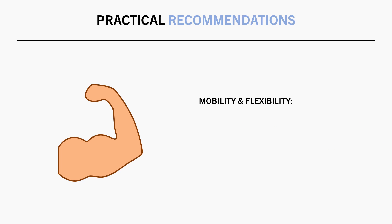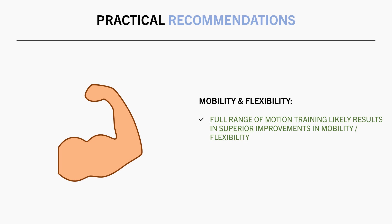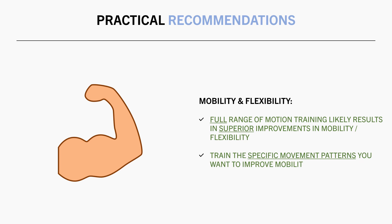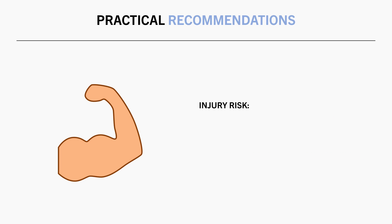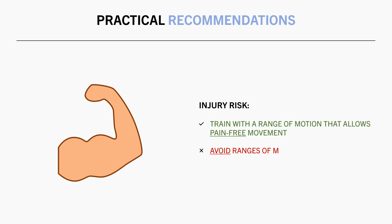For mobility and flexibility, there isn't much data to go off, but it seems reasonable to assume that training with a larger range of motion will likely improve flexibility to a greater extent than partial range of motion. More specifically, we would probably want to lift through the specific movement patterns and joint positions that we are trying to improve flexibility of. And in terms of injury risk, there isn't really much evidence to suggest an effect either way. Instead, lifters should train with a range of motion that allows them to lift pain-free and avoid certain ranges of motion if they are causing joint pain or discomfort.